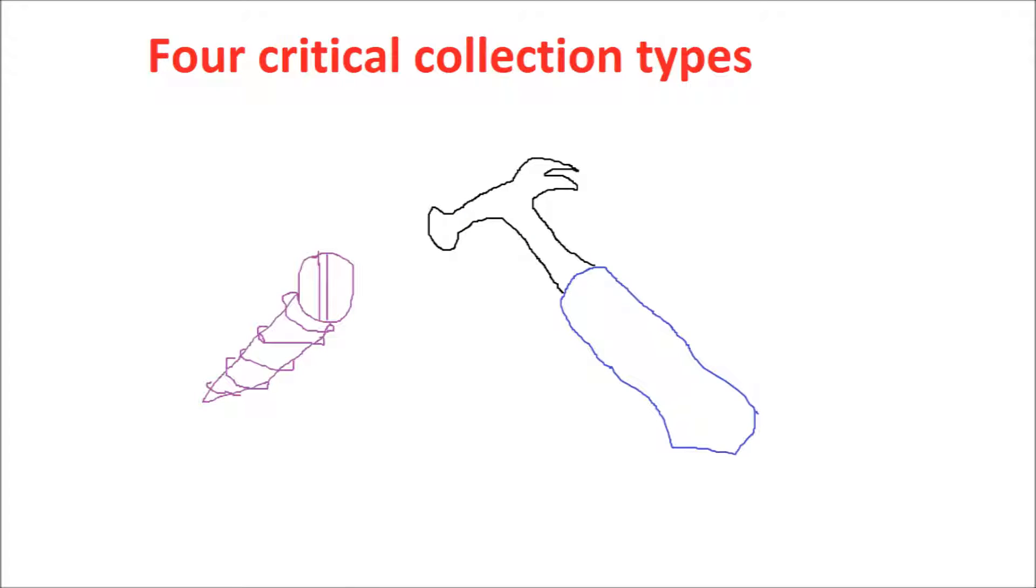In this episode, I'm going to talk about collections. Collections is a term used to describe a data structure that holds a group of objects. There are four key collection types that we'll use while coding.